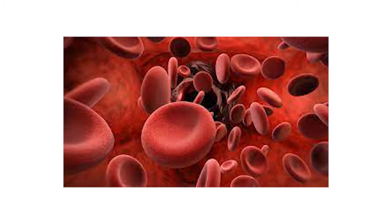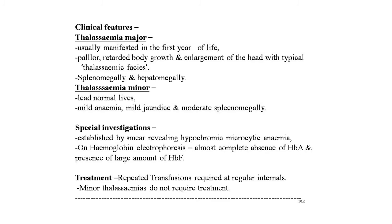Clinical features of thalassemia major are manifested in the first year of life: pallor, retarded body growth, enlargement of the head with typical thalassemic facies, splenomegaly, and hepatomegaly. Thalassemia minor patients lead normal lives with mild anemia, mild jaundice, and mild splenomegaly. Special investigations: blood smear reveals hypochromic microcytic anemia; hemoglobin electrophoresis shows almost complete absence of HbA and presence of large amounts of HbF. Treatment: repeated transfusions at regular intervals; minor thalassemia does not require treatment.